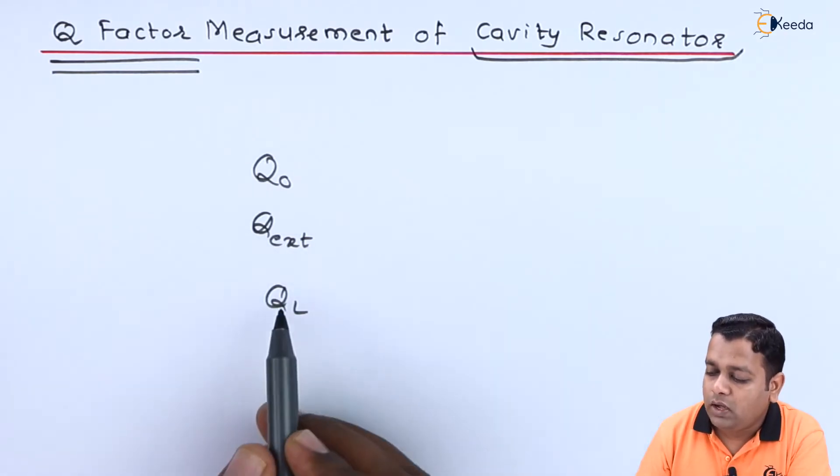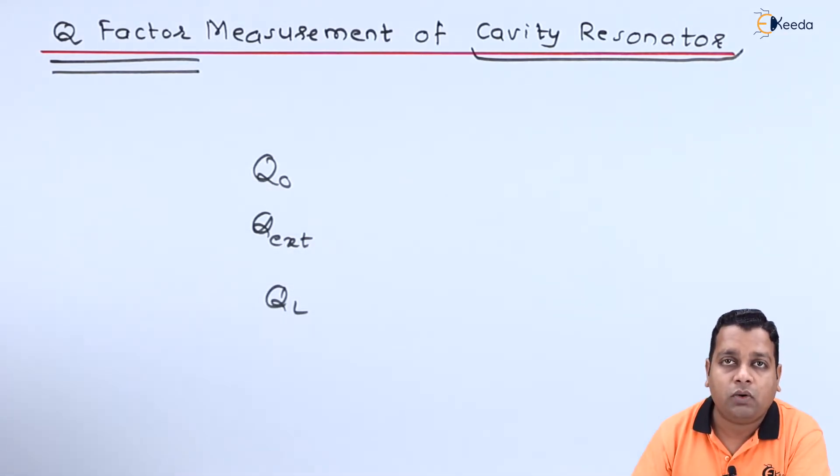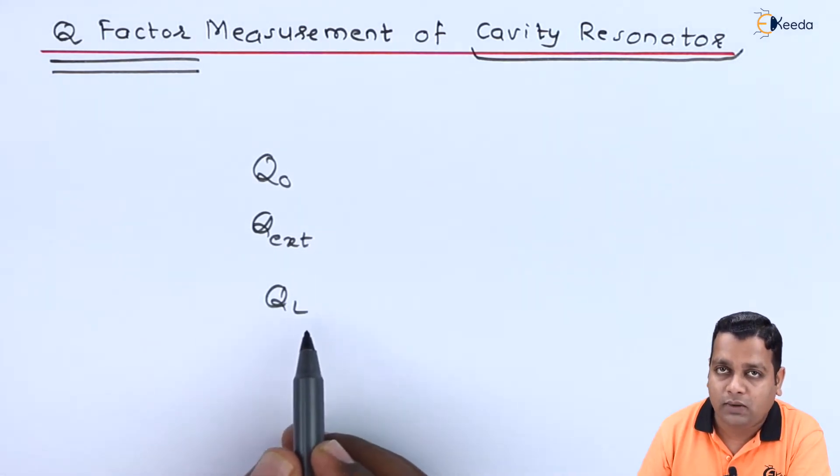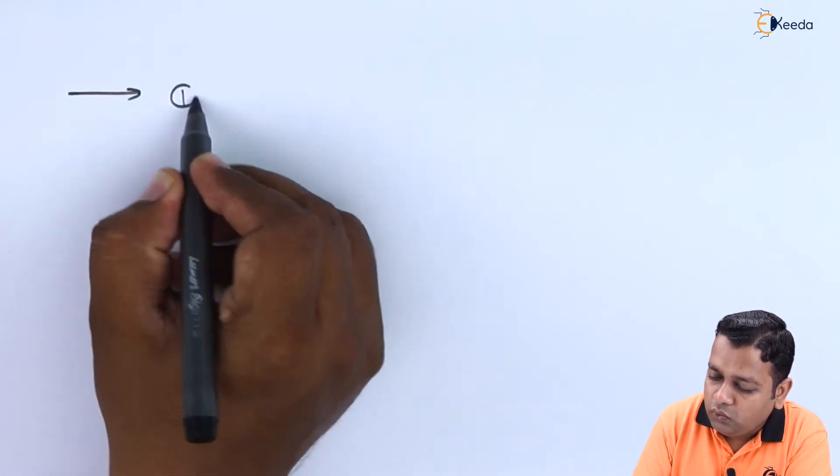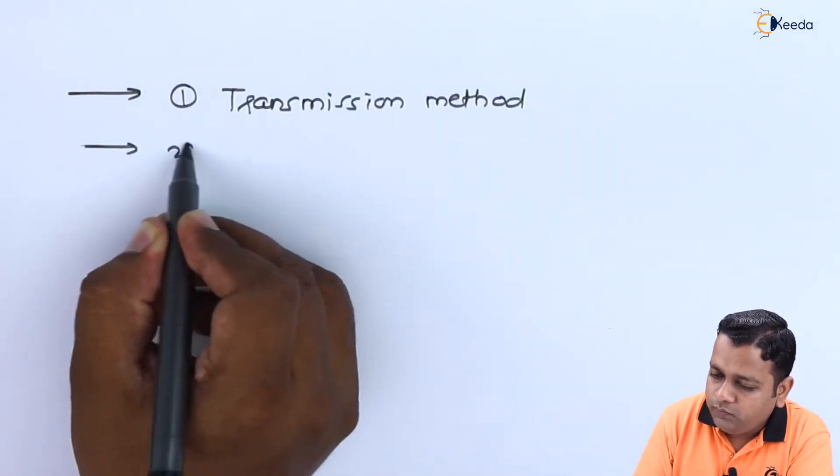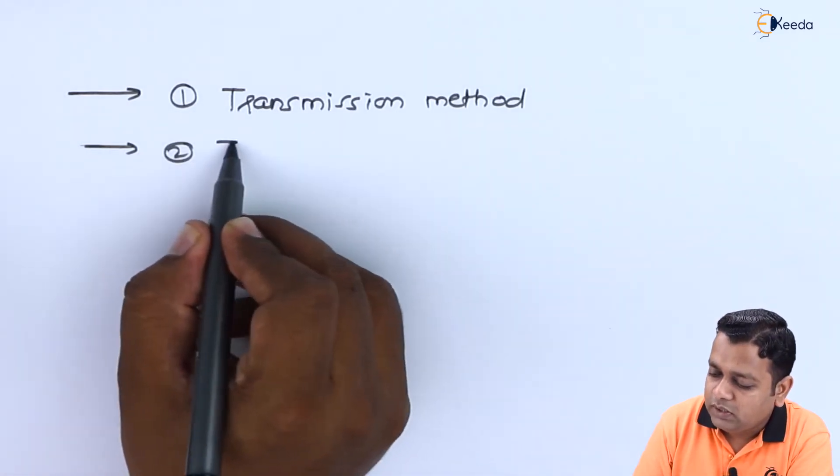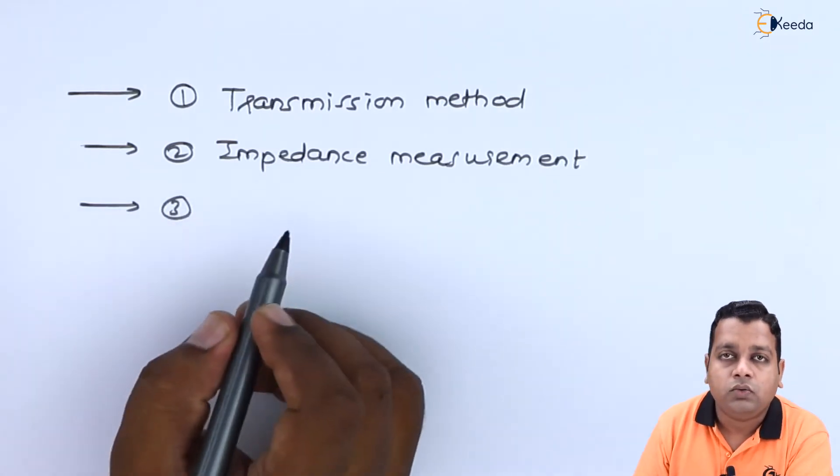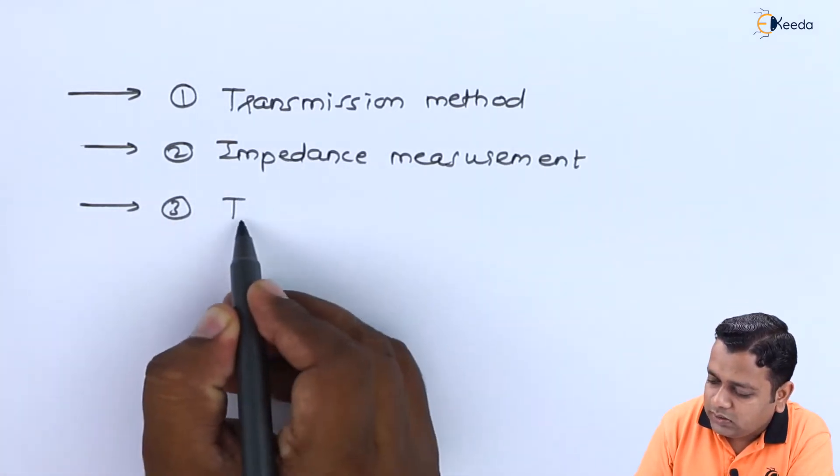For the cavity resonator we have to make the measurement of the quality factor. Practically we shall be requiring the value of loaded quality factor. Now to look at the different alternatives with which we can have the measurement of this quality factor, we have three options. Option number one is to go with transmission method. Option number two is to use impedance measurement technique, and the third alternative is that we should have the transient decay or decrement method.